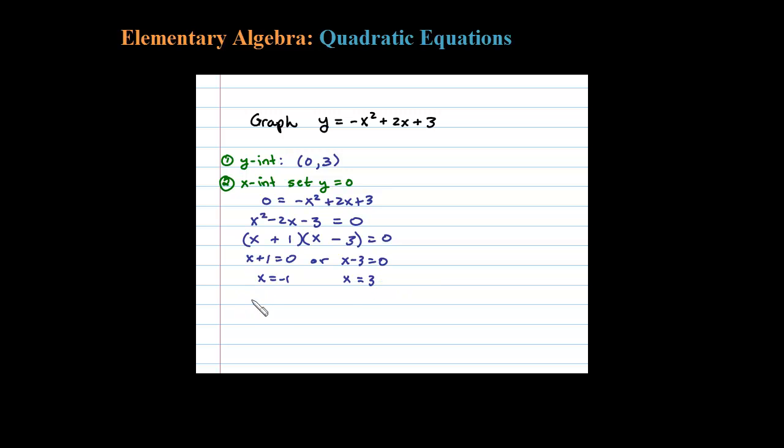So I have two x-intercepts: (-1, 0) and (3, 0). X-intercepts are ordered pairs. The third step is to find the vertex. We have a handy formula for this.